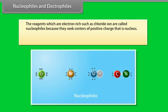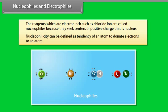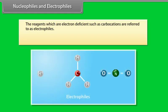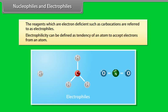Nucleophiles and electrophiles: reagents which are electron rich, such as chloride ion, are called nucleophiles because they seek centers of positive charge, i.e., the nucleus. Nucleophilicity is defined as the tendency of an atom to donate electrons. Reagents which are electron deficient, such as carbocations, are referred to as electrophiles. Electrophilicity is defined as the tendency of an atom to accept electrons.